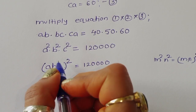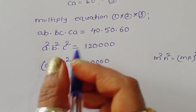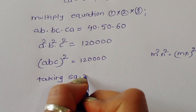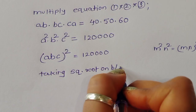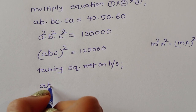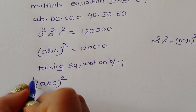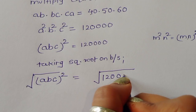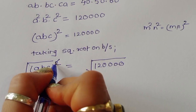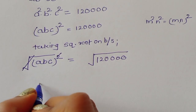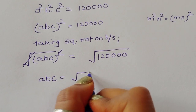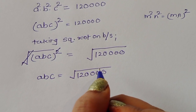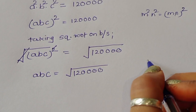To find abc, we take the square root of both sides. The square cancels with the square root, giving us abc = √120,000. Now we need to simplify this square root by finding the prime factorization of 120,000.